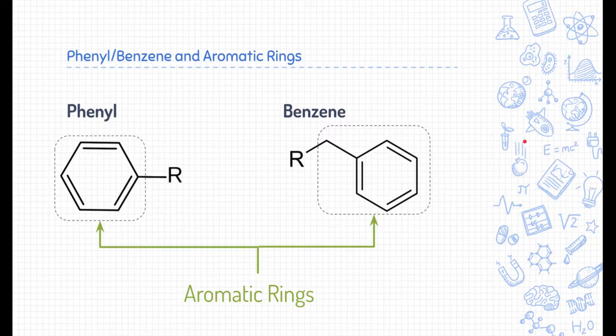Benzene is found naturally in volcanoes and forest fires. And it's also found in crude oil, gasoline, cigarette smoke. In industry, it's used for rubbers, dyes, and pesticides.